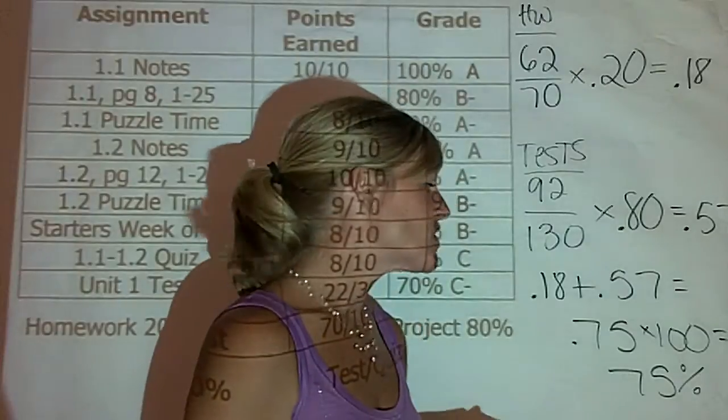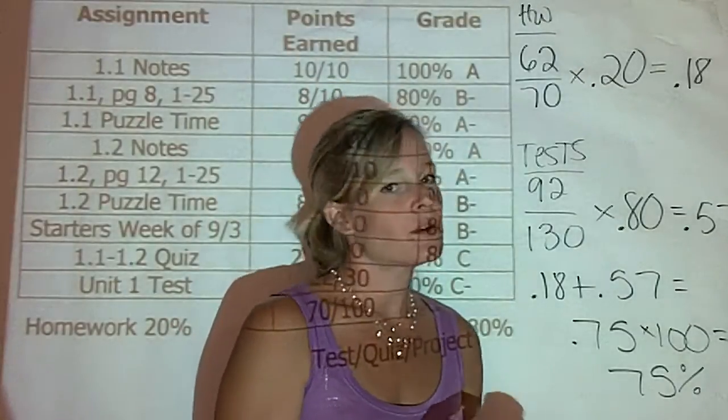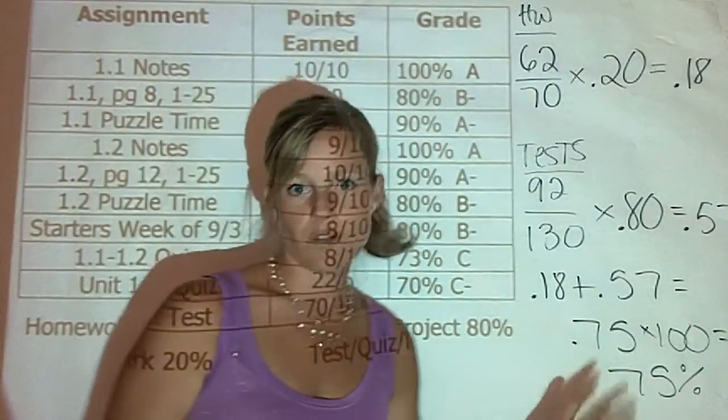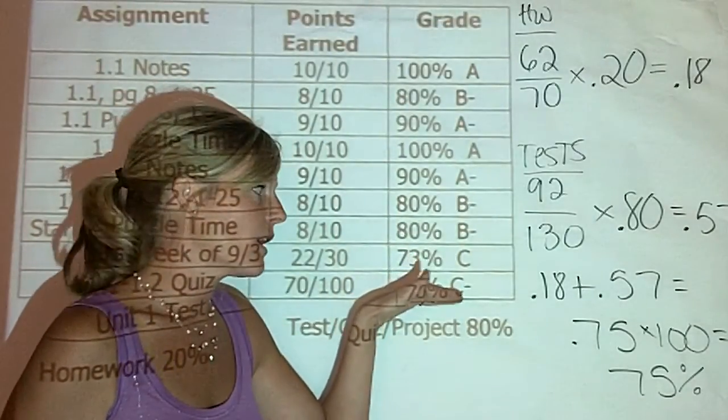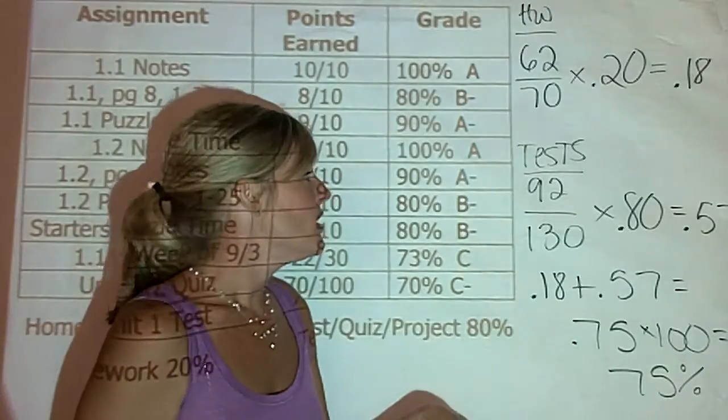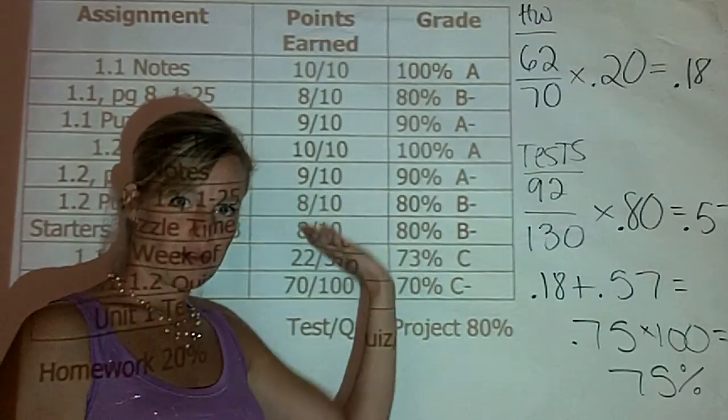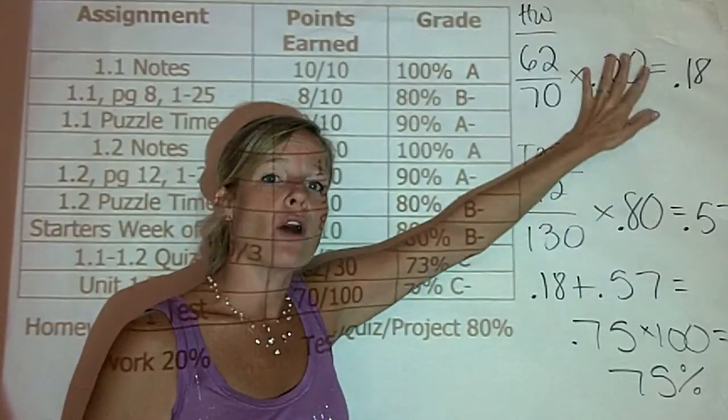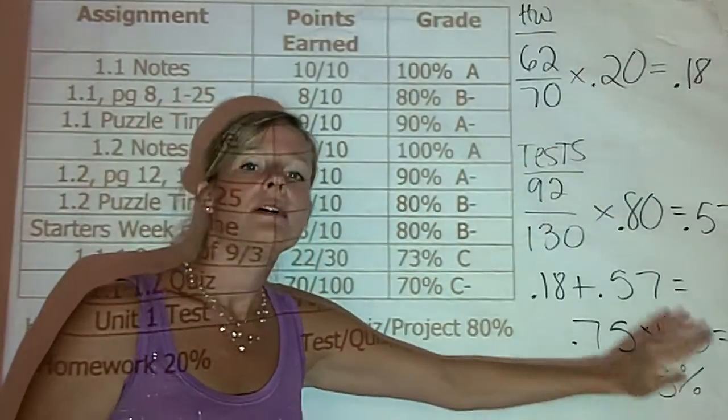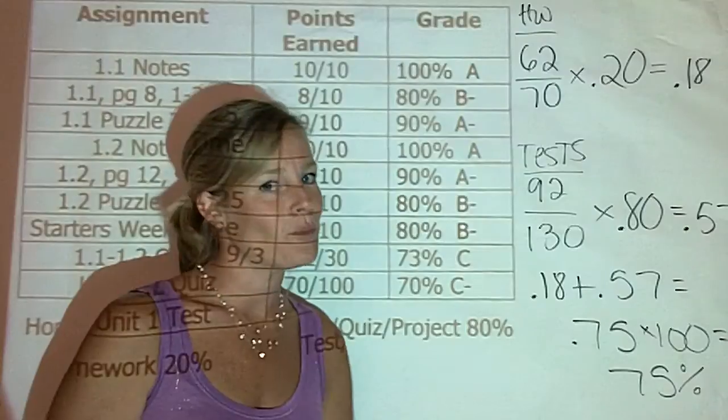And we see that their grade is actually a 75%. So, in first looking at the grade, there's a lot of confusion in thinking that you just add all of those percentages up and divide by how many there are. That's not the case. You actually have to separate out the homework and the assessments, because the homework assignments count for a smaller portion of their grade than the tests and quizzes do. I hope this helps.